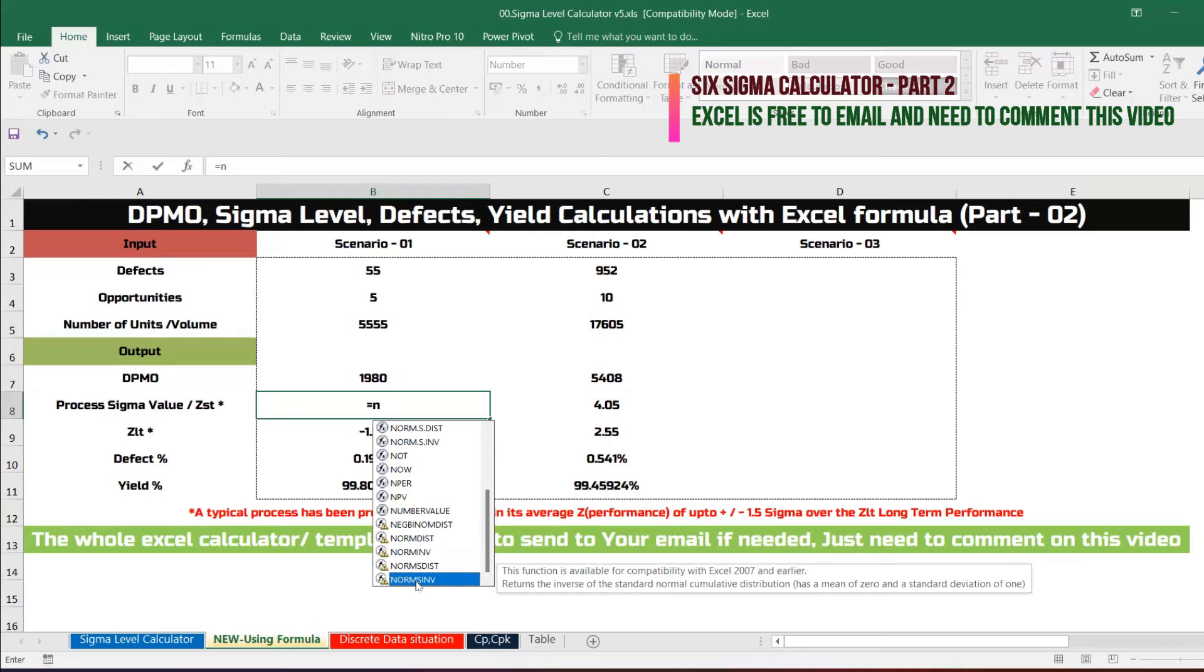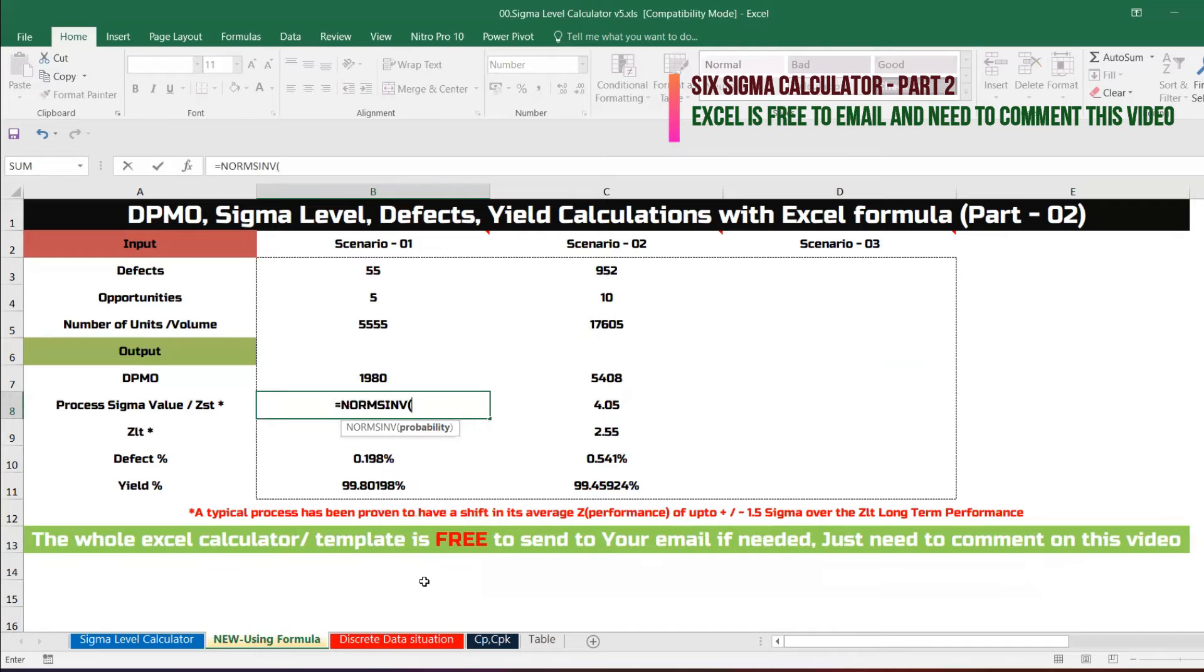One minus defect divided by number of opportunities times number of units, the same thing which we typically did in the DPMO and close it. So 2.88.